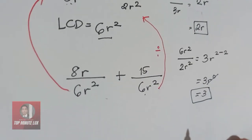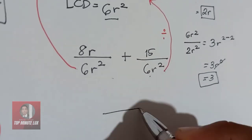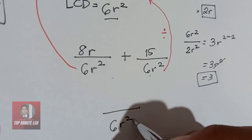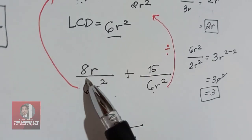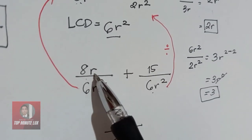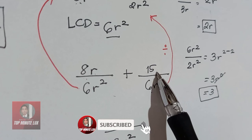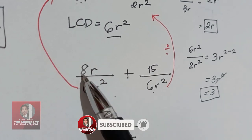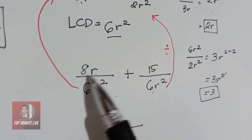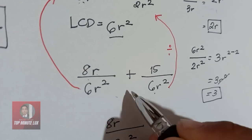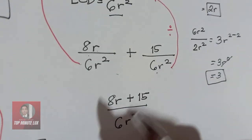Now add the similar rational algebraic expressions. Copy the denominator 6R squared. The numerator becomes 8R plus 15. You cannot combine 8R and 15 because 8 has a variable R while 15 does not. So the final answer is (8R + 15) over 6R squared.